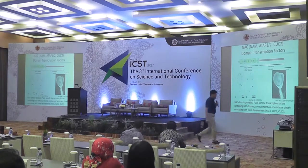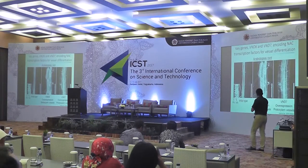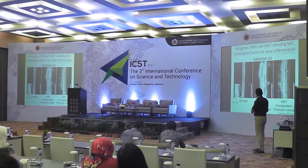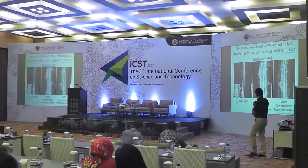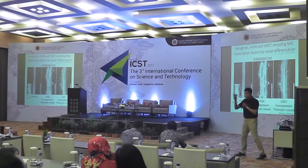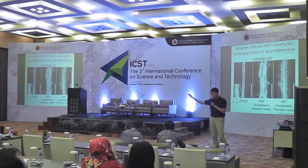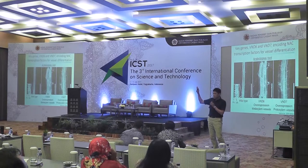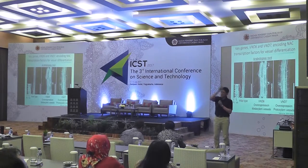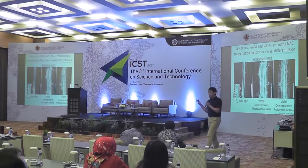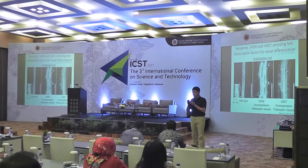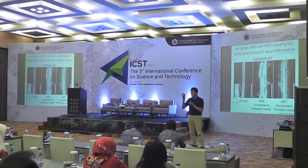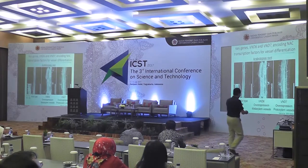We found that VND6 and VND7 are NAC transcription factors. If we overexpress VND6 and VND7 in Arabidopsis roots, we can induce cells with secondary cell walls. These two genes have different directions: VND6 can induce metaxylem vessel with pitted secondary cell wall, while VND7 can induce helical secondary cell wall, which is protoxylem vessel. We found these genes in 2005.